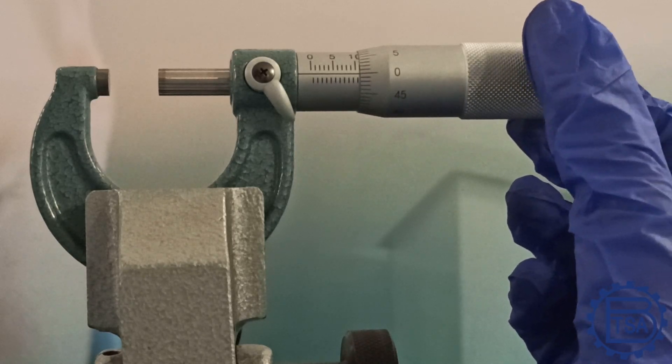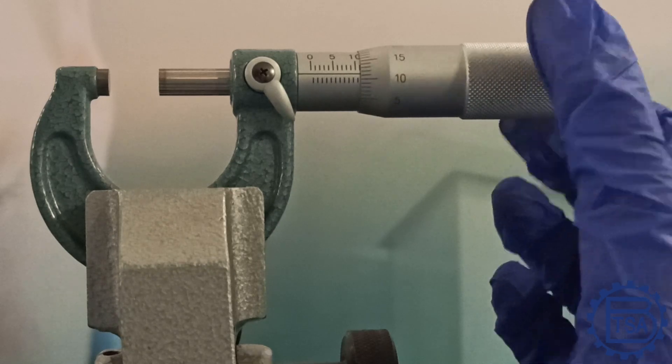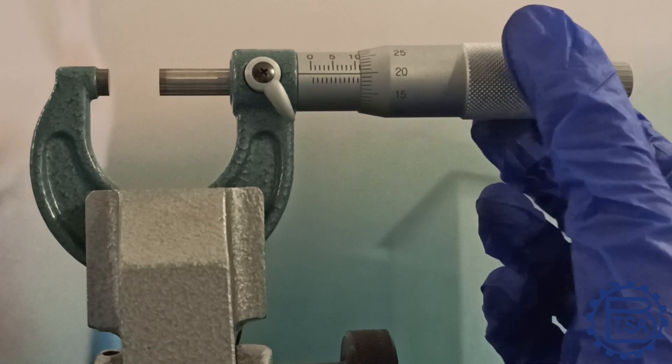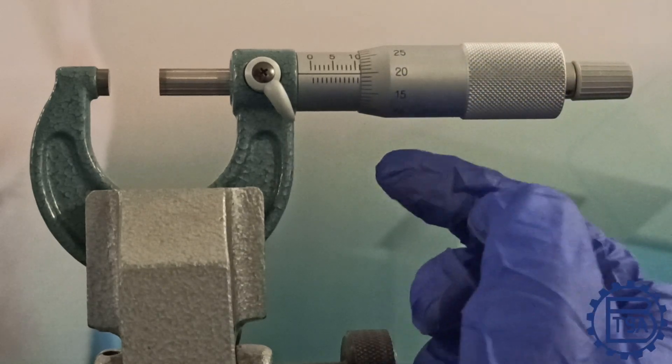Note the sleeve scale reading, which is 11 mm. We know that the least count of our micrometer is 0.01 mm. This means each line on the thimble represents 0.01 mm.